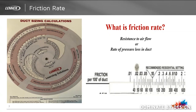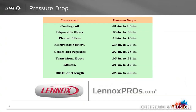Now we're going to look at friction rate. Friction rate is the resistance to airflow, or rate of pressure loss, in a duct system. It is important to know that all devices installed in a duct system external to the equipment have a pressure drop — cooling coils, pleated filters, grills and registers, as well as each 100-foot section of duct work.